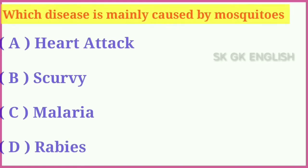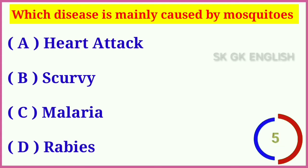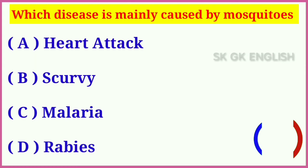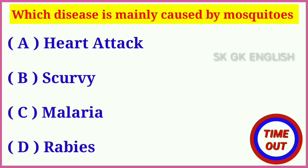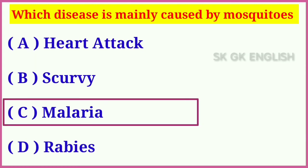Question number ten: Which disease is mainly caused by mosquitoes? Options are: A. Heart attack, B. Scurvy, C. Malaria, D. Rabies. Correct answer is C. Malaria.